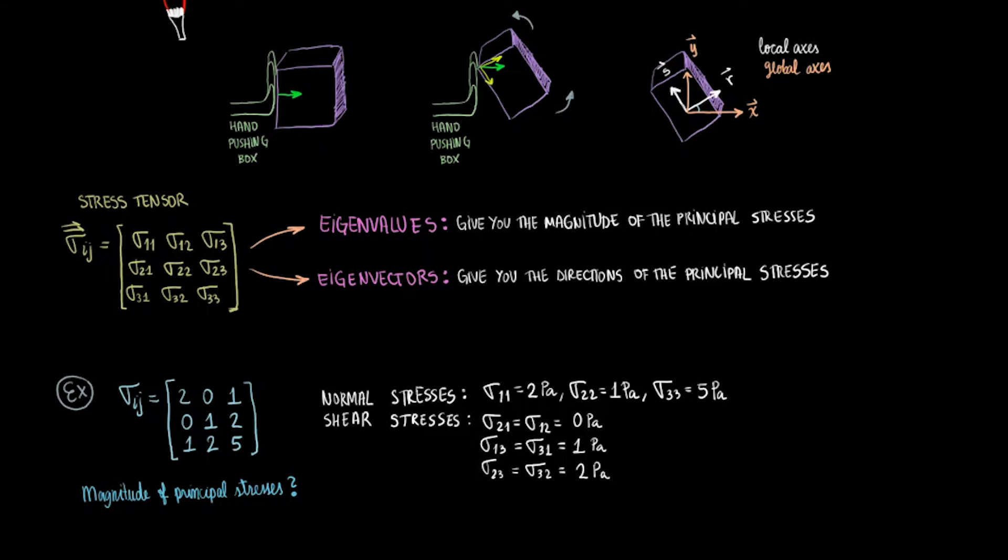Then we can get the shear stresses from the off-diagonal components. Remember that the stress tensor is symmetric? Sigma 21 equals sigma 12, which is 0 pascals. Sigma 13 equals sigma 31, which is 1 pascal. Sigma 23 equals sigma 32, which is 2 pascals.